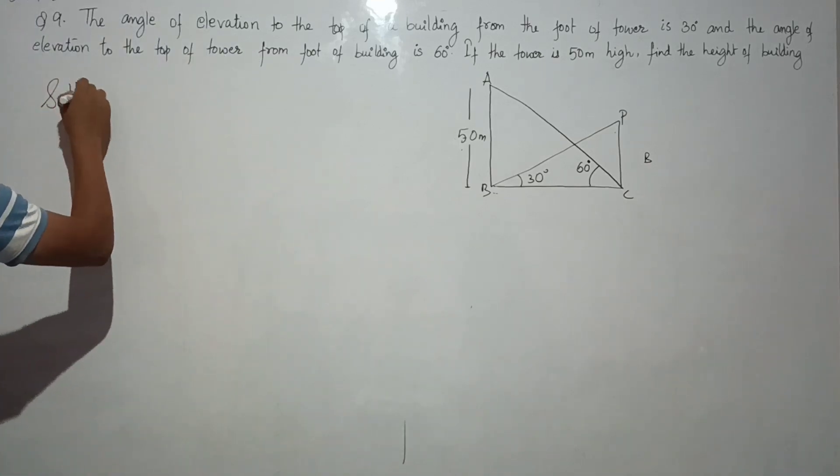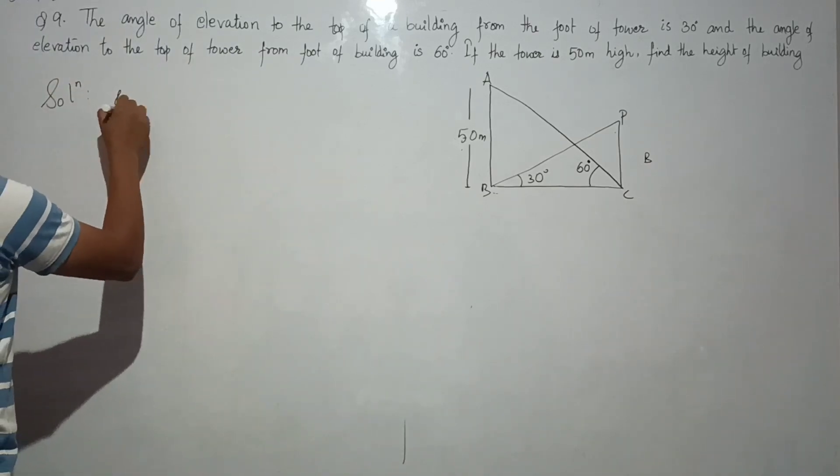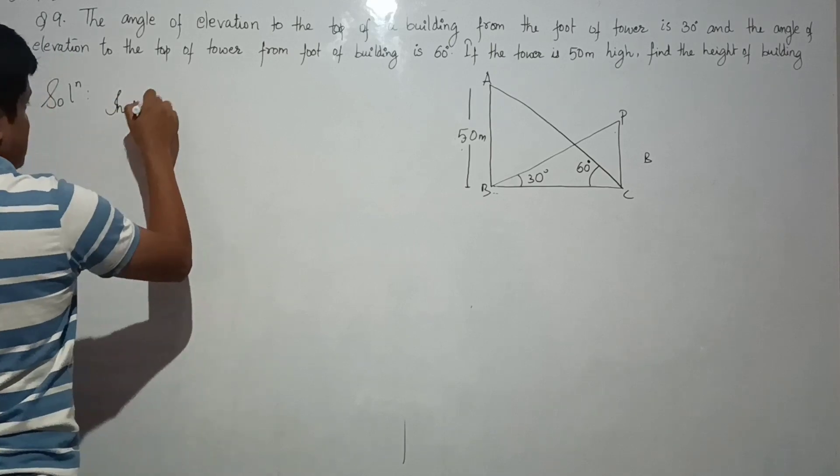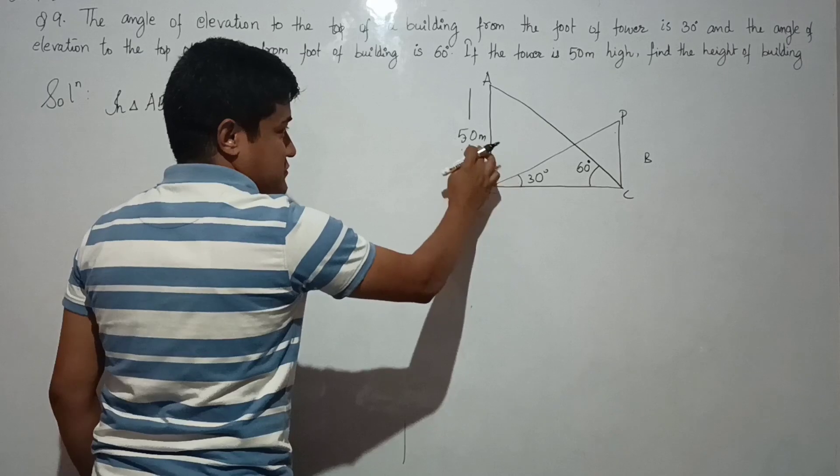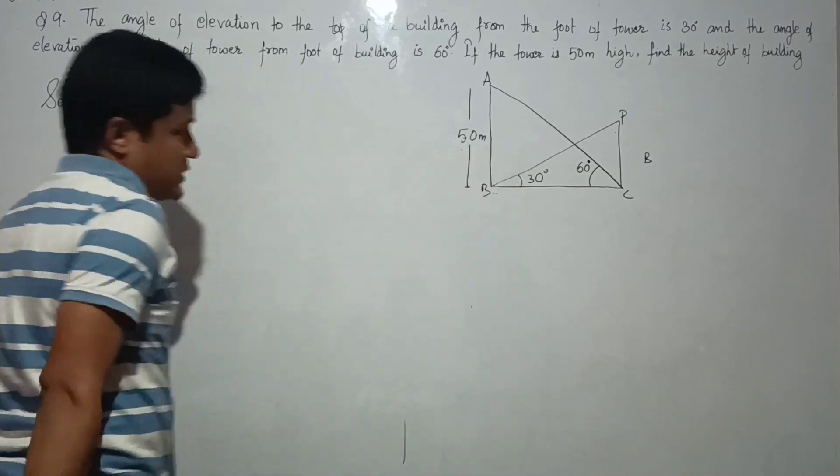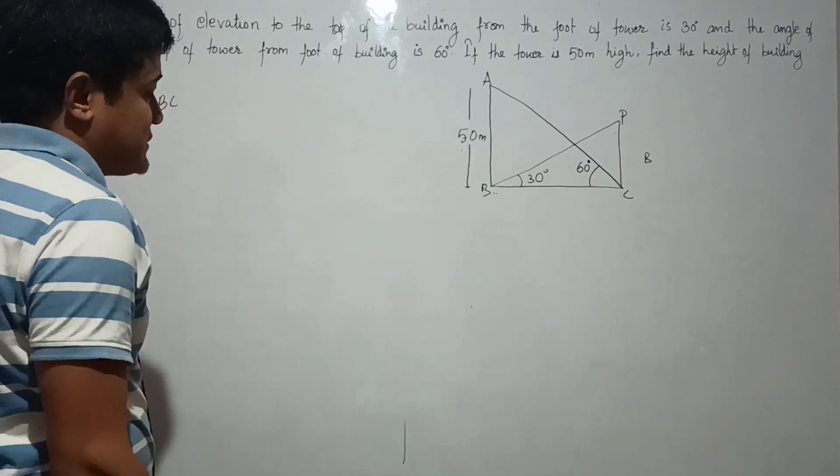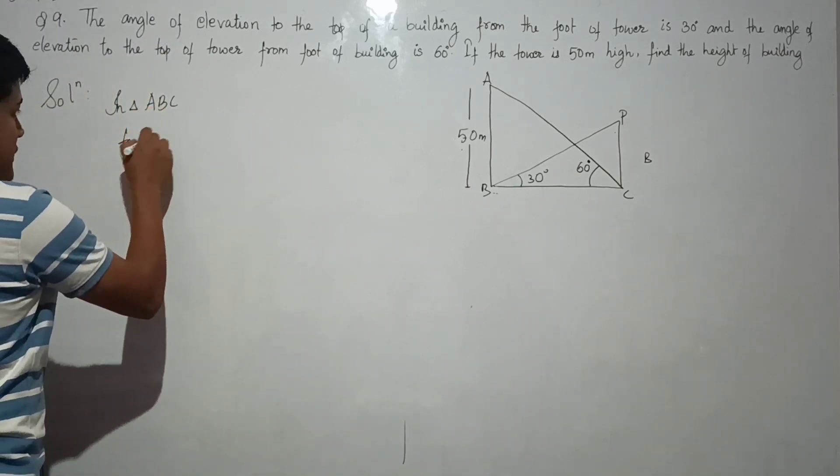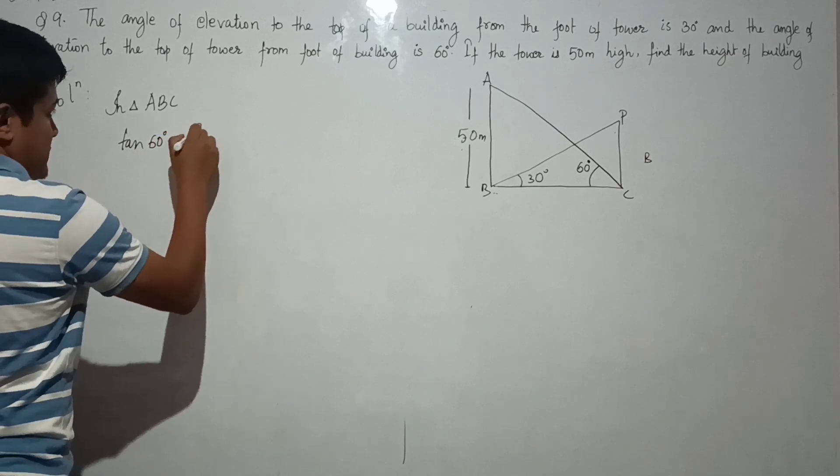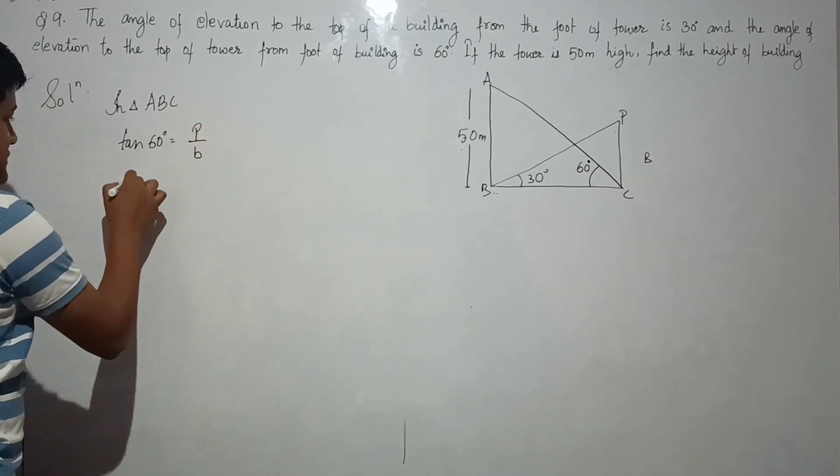do the solution. In triangle ABC, tan 60 degrees equals perpendicular by base. So tan 60 degrees equals perpendicular by base.